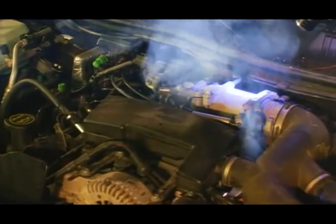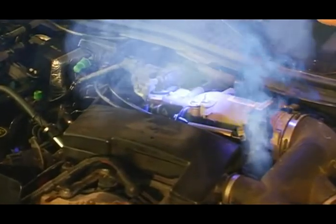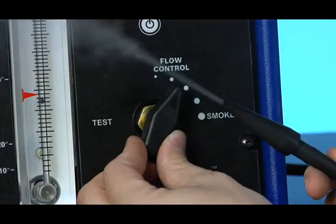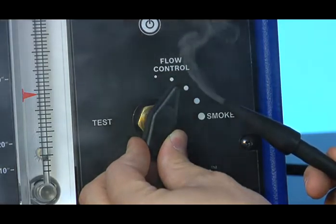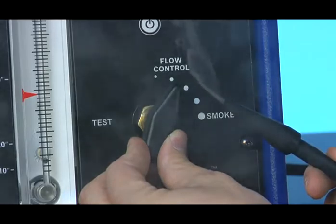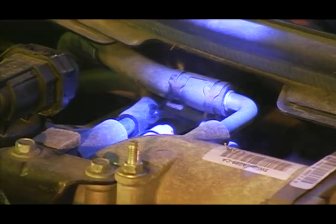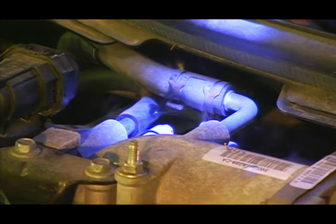Locating the leak source is sometimes easier with less smoke volume. First fill the system with smoke, then reduce volume using your flow control. The rule of thumb is to turn the flow control down to around the .010 marker. This will direct you to the leak, and where there is smoke, there is money.